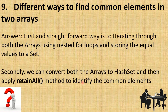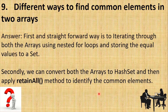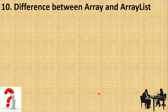The second approach is to convert both arrays to HashSets and then apply the retainAll() method. In a HashSet we can perform mathematical set operations, and finding common elements means finding the intersection of two sets. Using retainAll() on one HashSet with the other as argument will return the common elements present in both arrays.